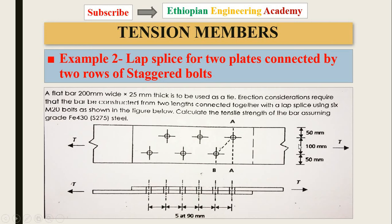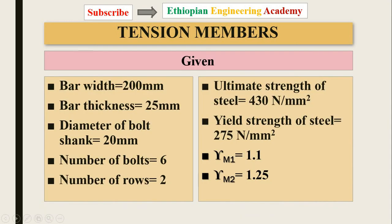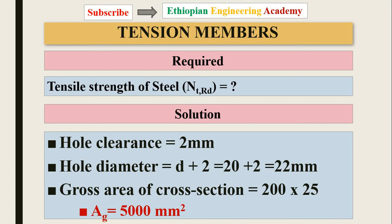The staggered pitch s = 90 mm and the gauge distance are given. The given values are: bar width 200 mm, bar thickness 25 mm, bolt diameter 20 mm, number of bolts six, number of rows two, ultimate strength 430 MPa, yield strength 275 MPa, partial safety factors γM0 = 1.1 and γM2 = 1.25. Hole clearance is 2 mm, giving a hole diameter of 22 mm.